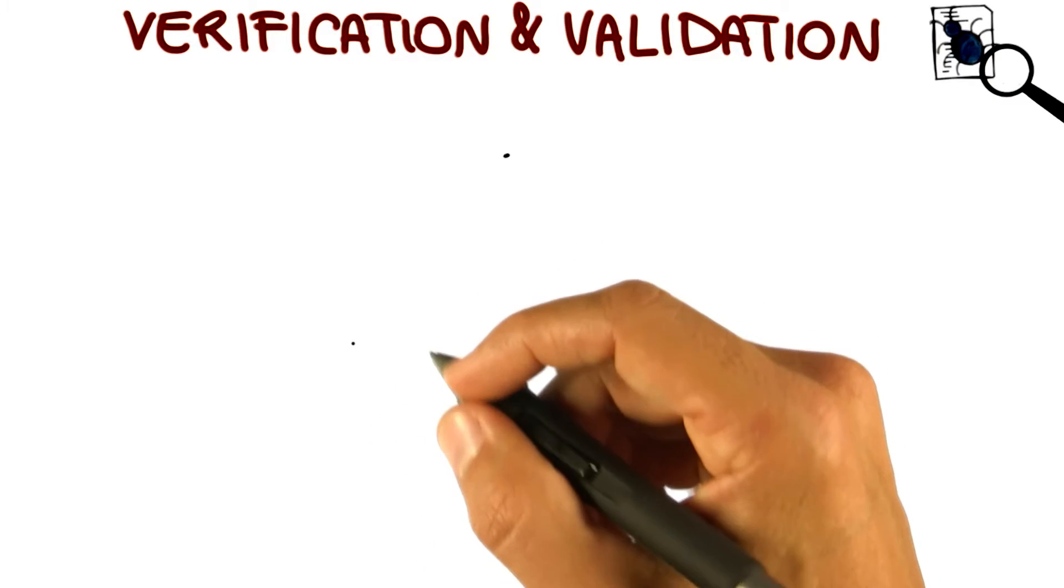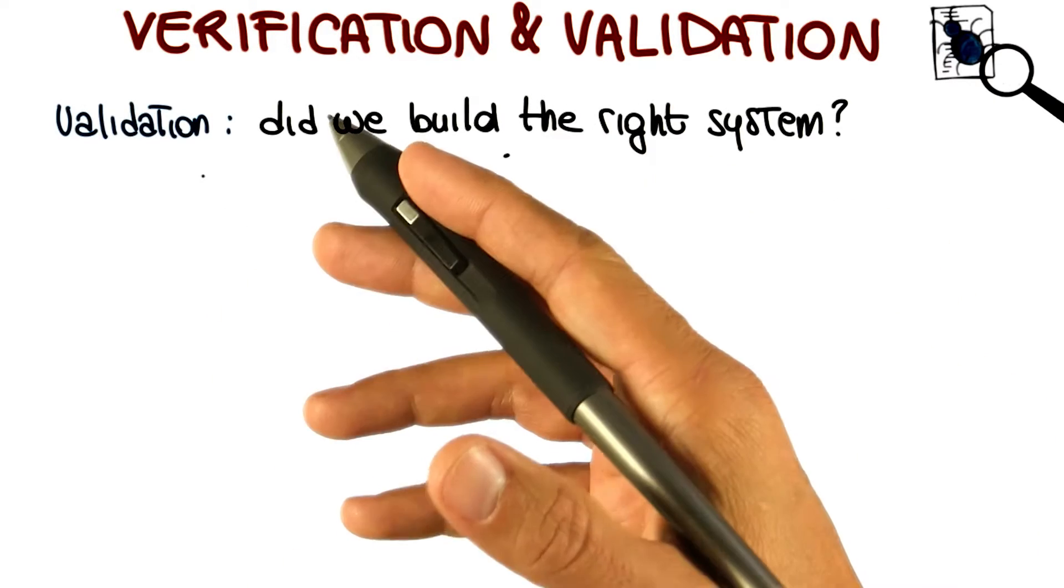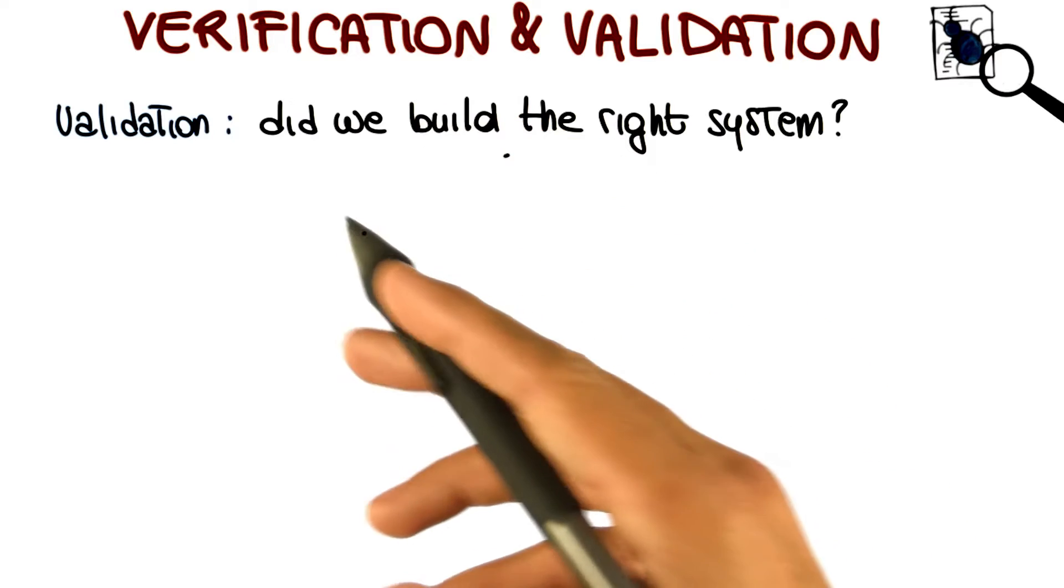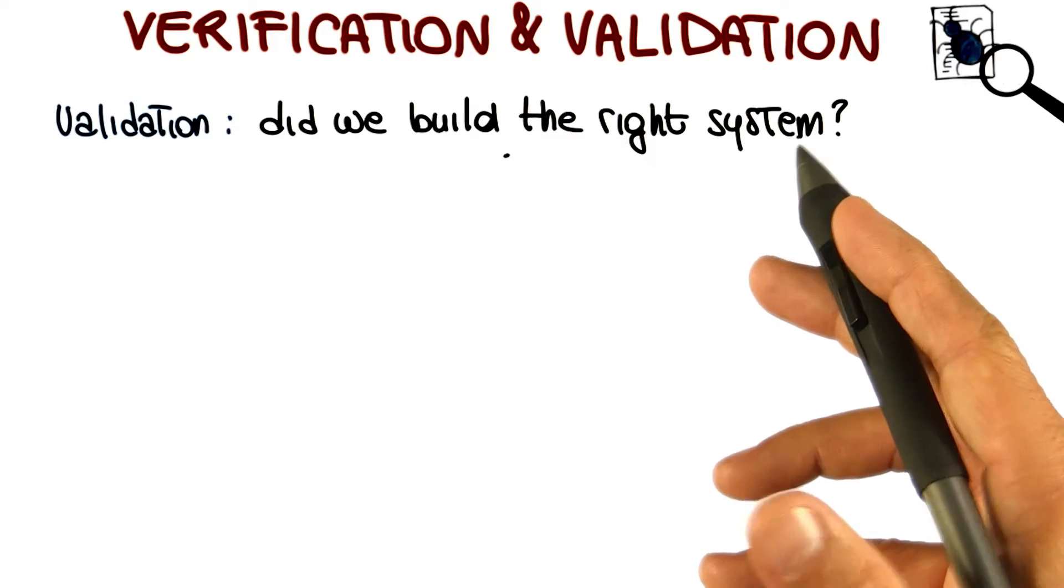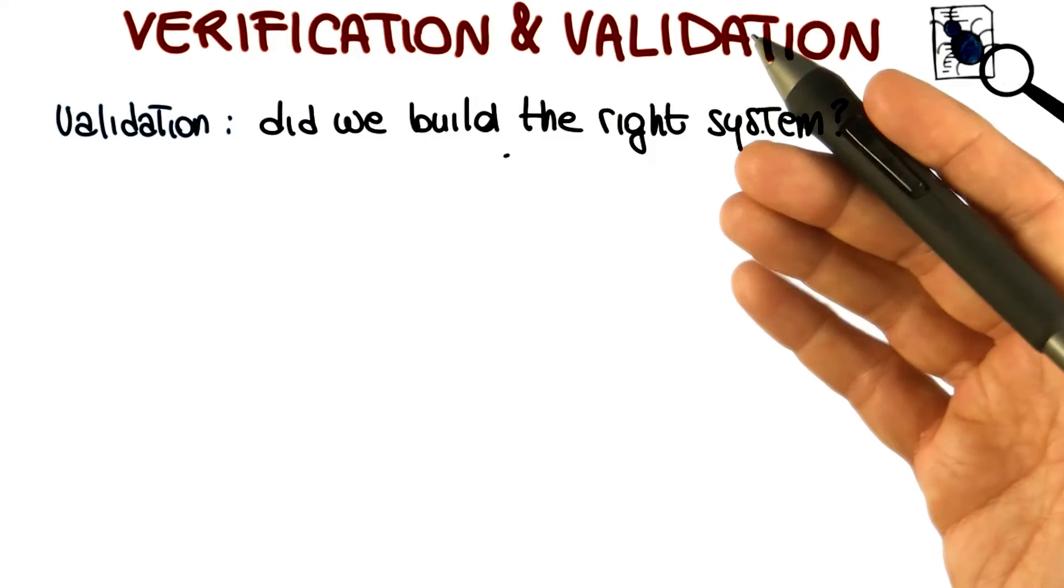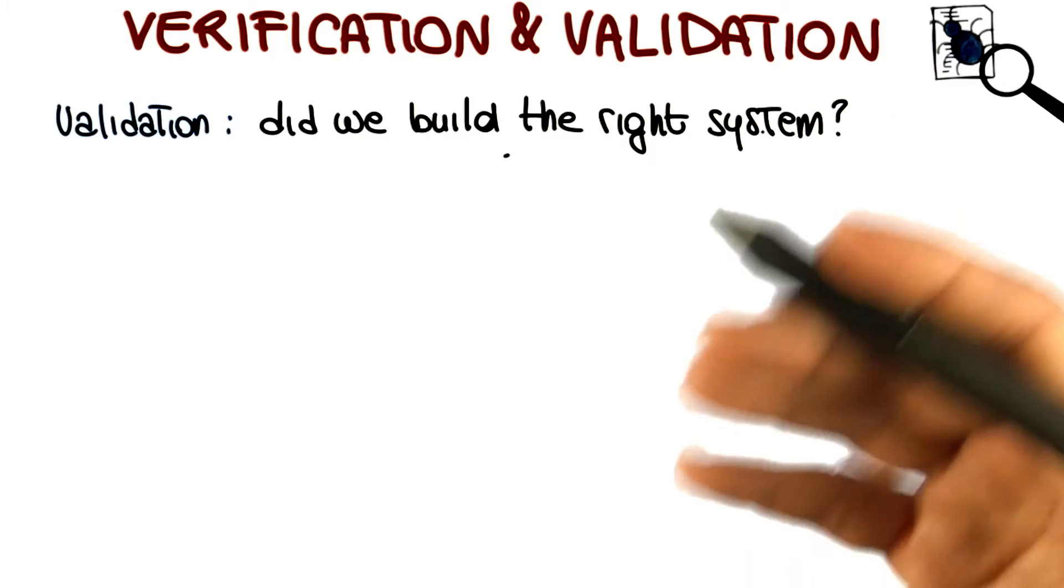More precisely, we can look at verification and validation independently. Validation is the activity that answers the question: did we build the right system? Did we build a system that the customer wants, that will make the customer happy?